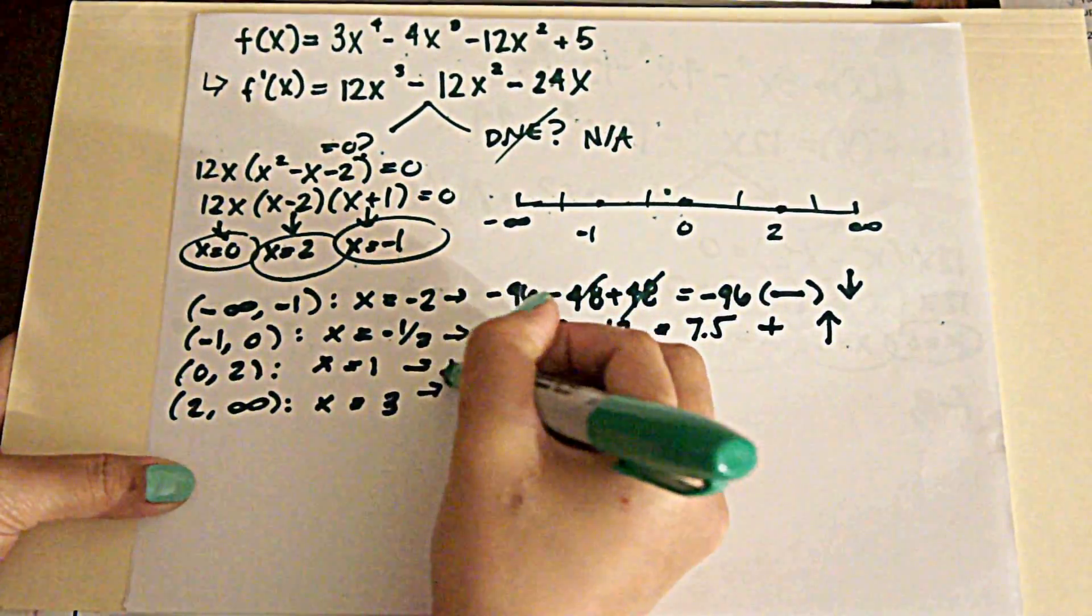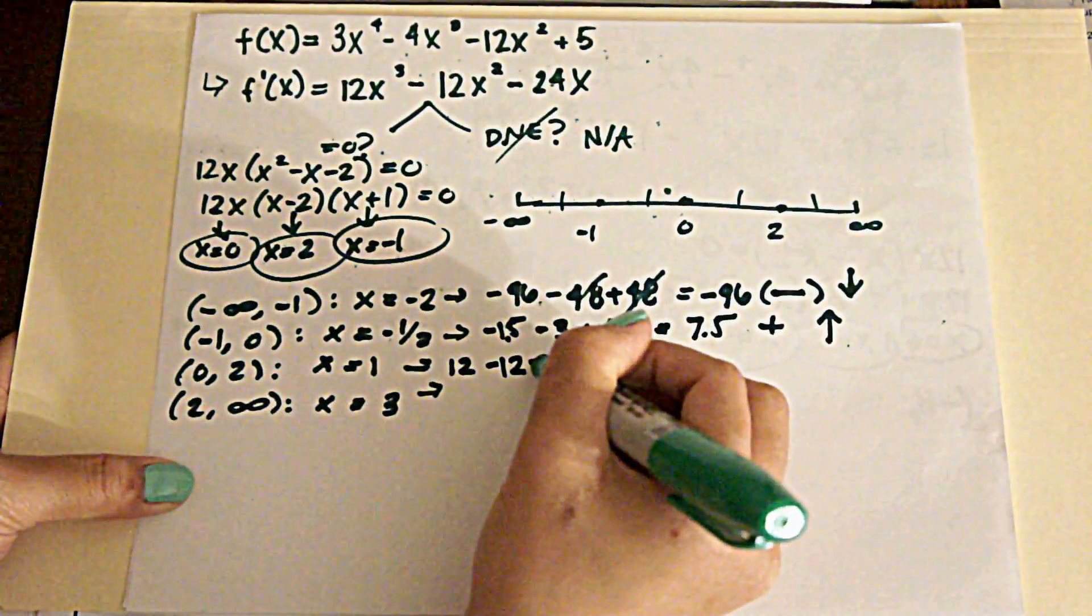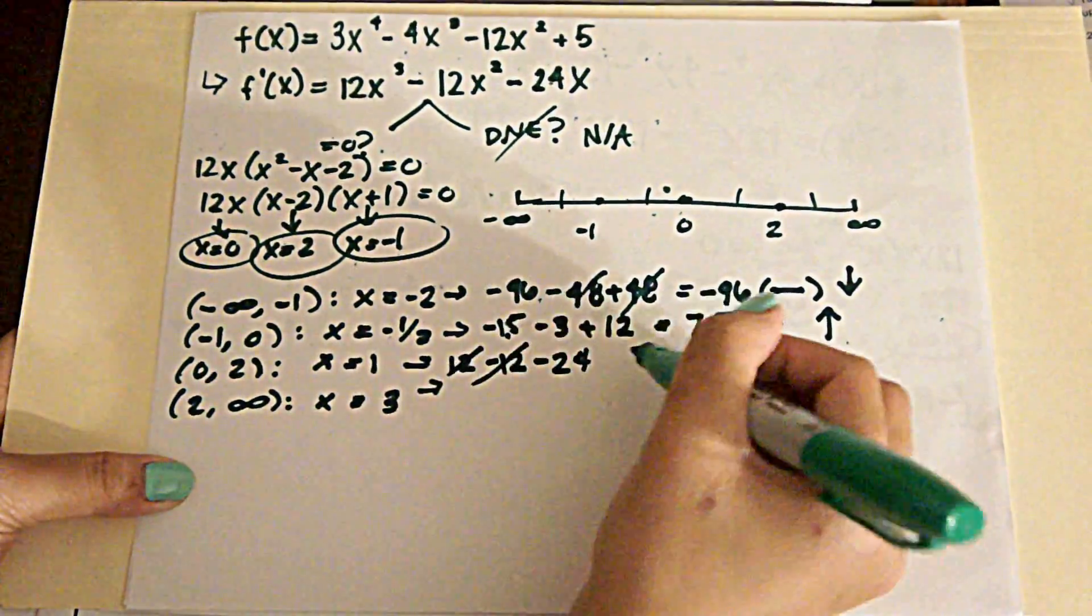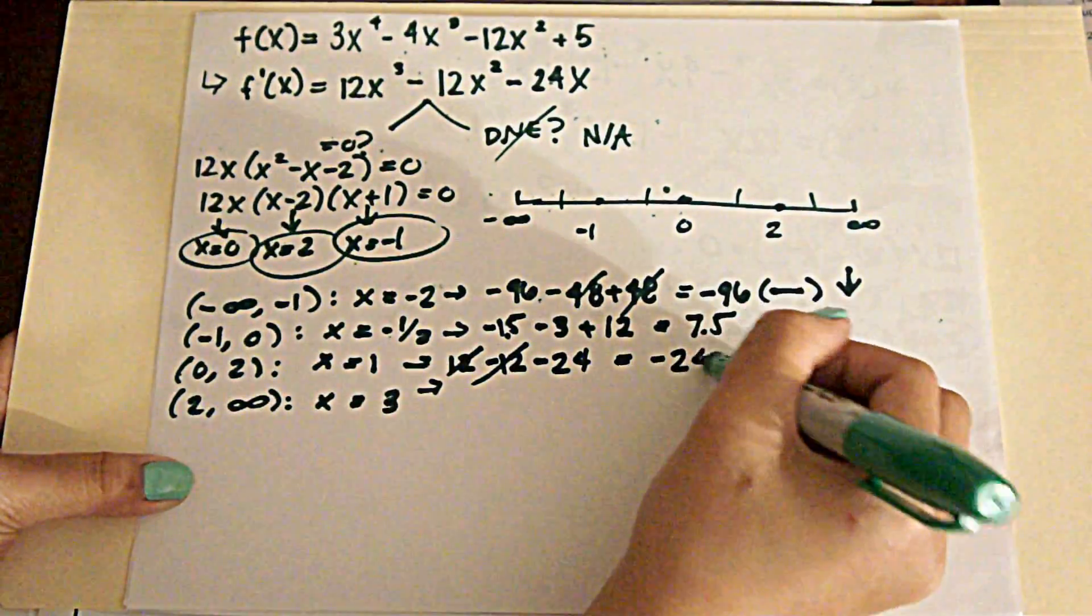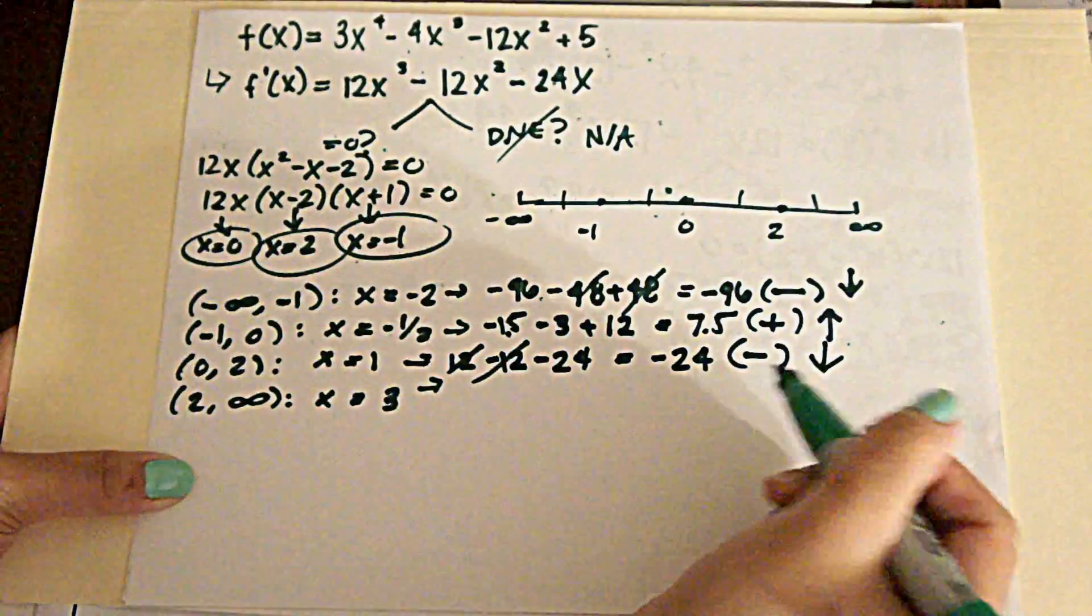Here we get 12 minus 12 minus 24. And those two cancel out. So we are just left with the negative 24. And the negative tells us right away that we are decreasing.